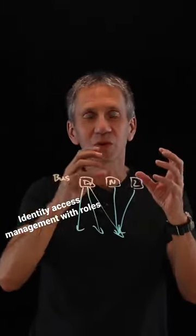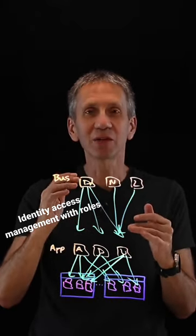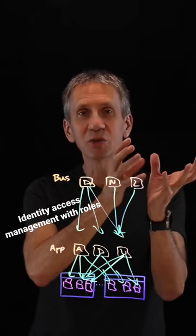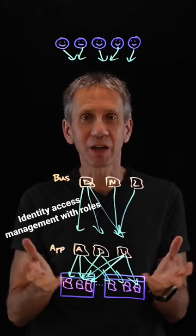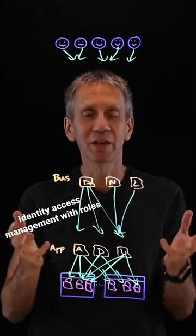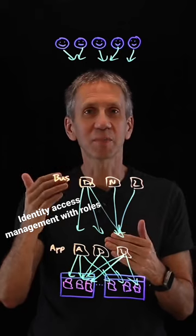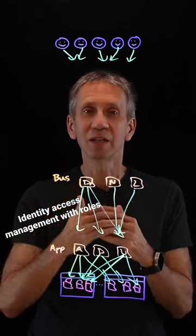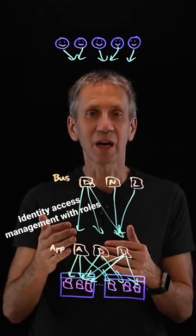Get that out of here. What we want to introduce are roles — business roles, application roles, abstractions — ways of grouping users together, ways of grouping applications and entitlements and their accesses together, which give us separation, flexibility, and a more simple design.